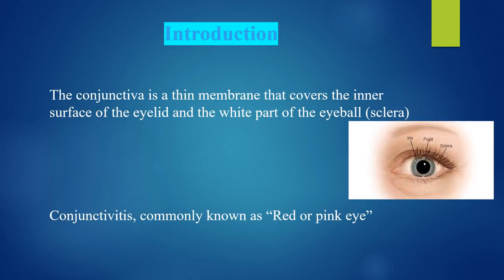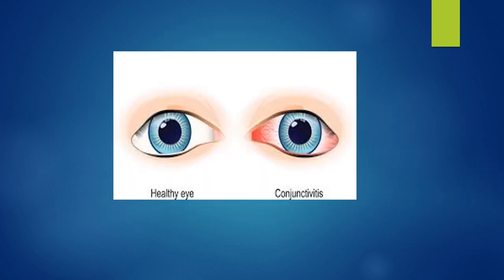The conjunctiva is a thin membrane that covers the inner surface of the eyelid and the white part of the eyeball. Conjunctivitis is commonly known as red or pink eye. In a healthy eye, the sclera is clear, whereas in conjunctivitis the sclera appears red in color.